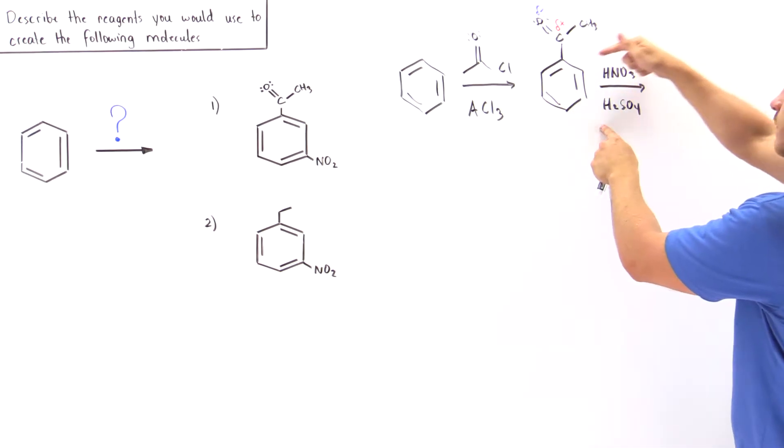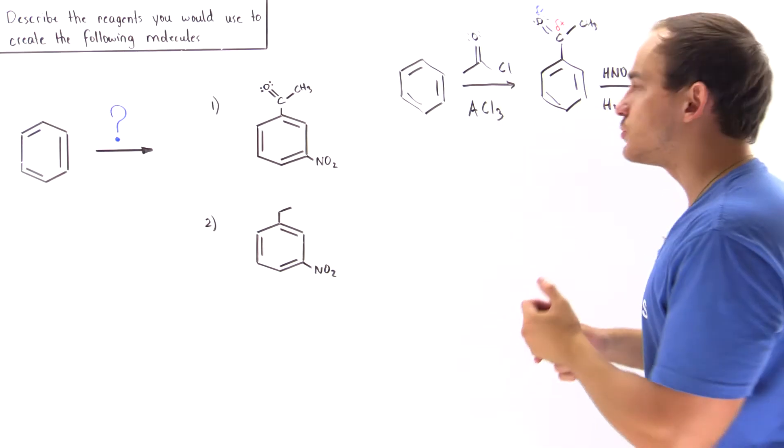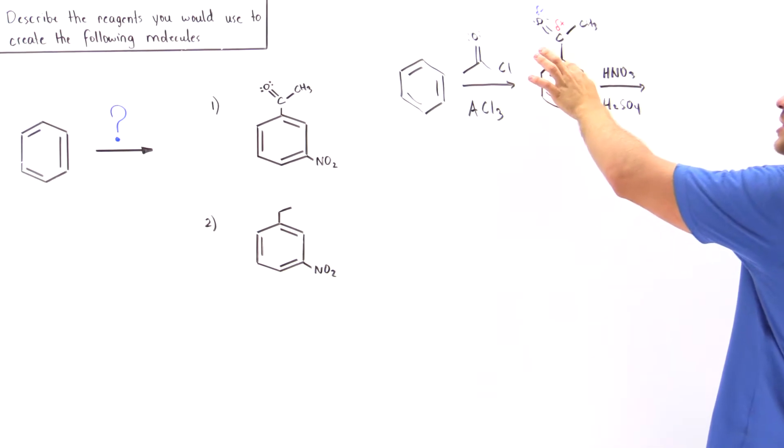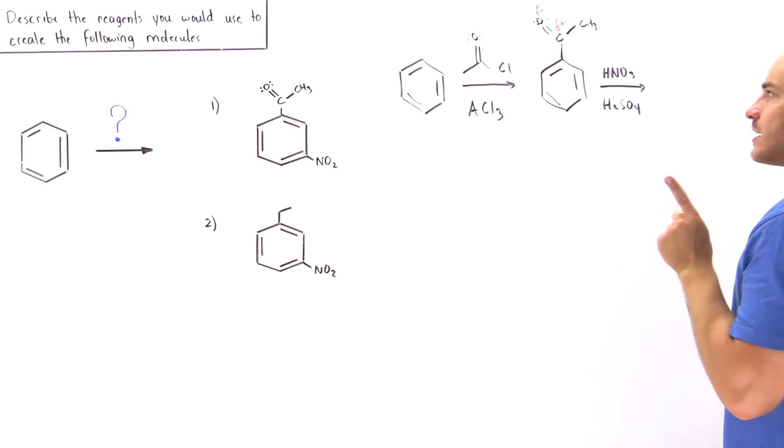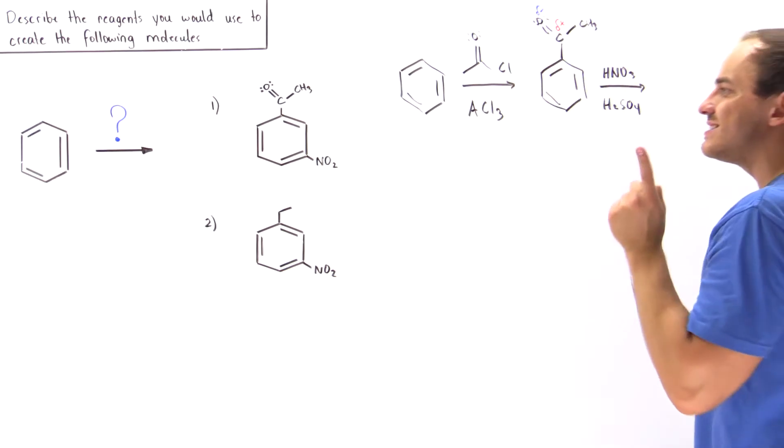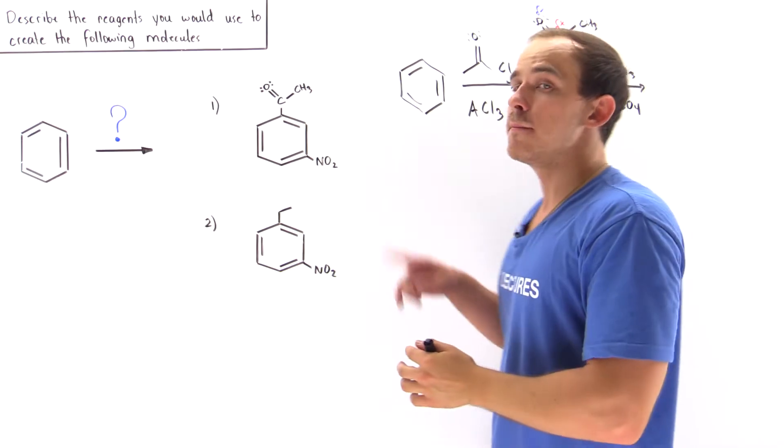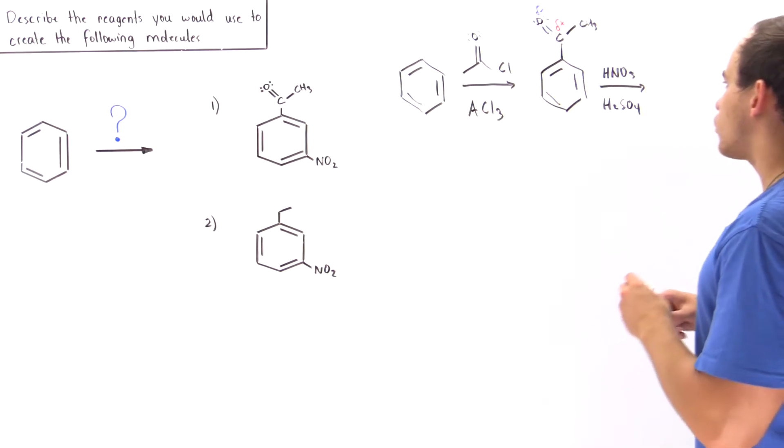And that means our molecule, the intermediate of this reaction, will not want to have a positive charge on this carbon. So that means this group is not ortho-para directing, but it is meta-directing.